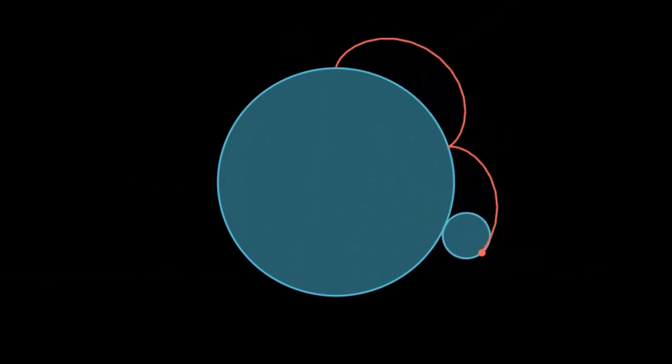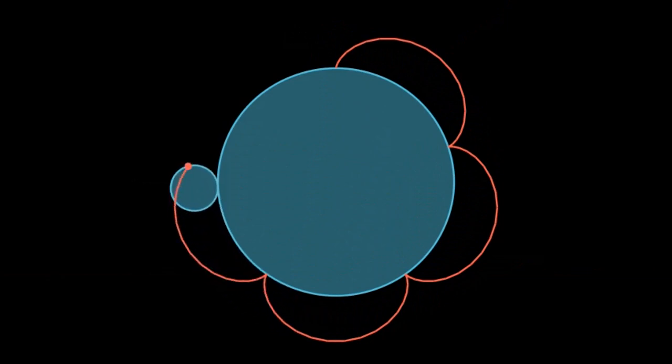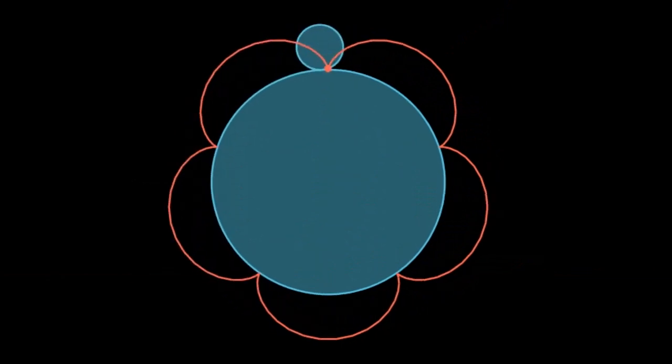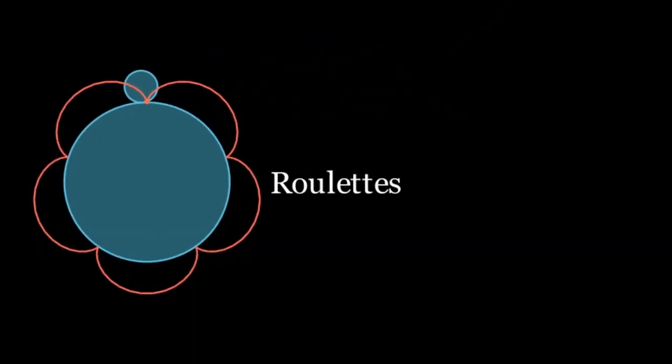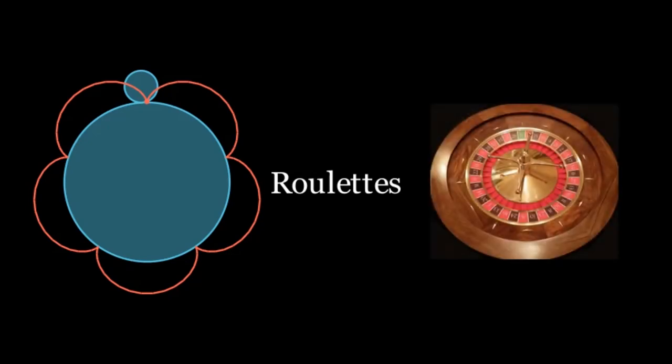It should now be clear what the common factor that relates all of these curves is. To generate each of the curves, we choose two shapes and let one of them roll along the other, at all times tracking some point on or outside of the rolling shape. The class of curves with this property are called roulettes, sharing their name with the popular French casino game.